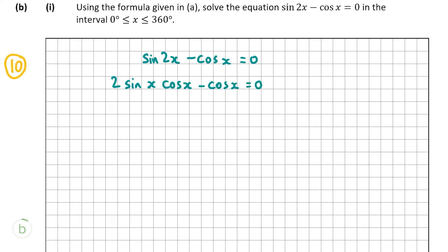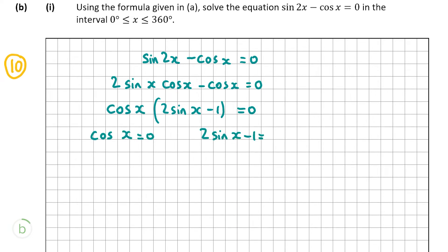Both of these terms have cos x as a common factor, so I'm going to factorize that as cos x outside of (2 sine x minus 1). Now I can set both factors — cos x and (2 sine x minus 1) — equal to 0 and then solve for x. If cos x is equal to 0, we know that cos is positive in the first and fourth quadrants.